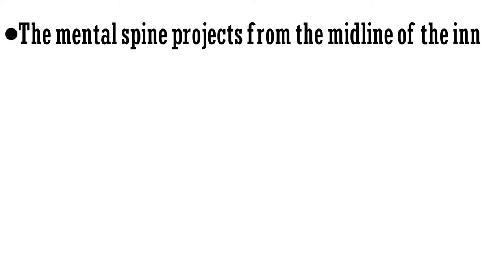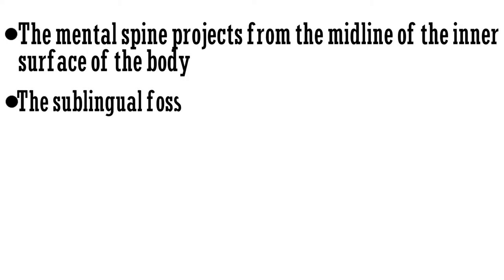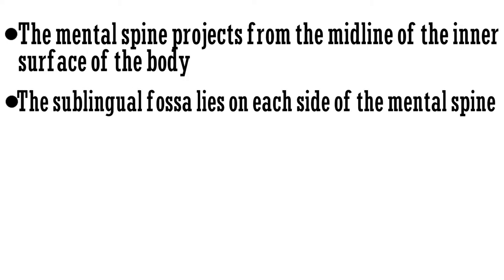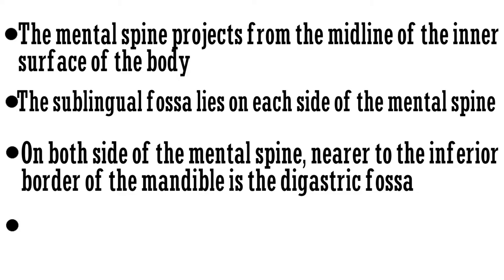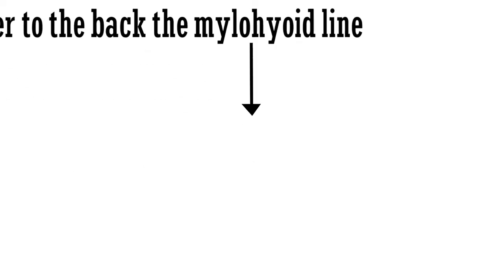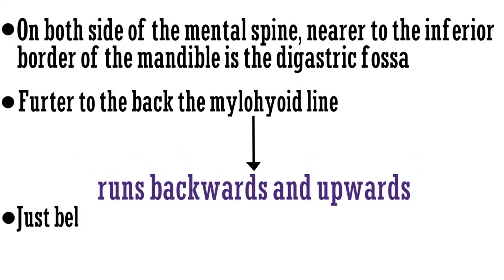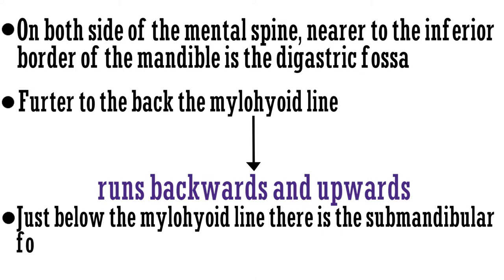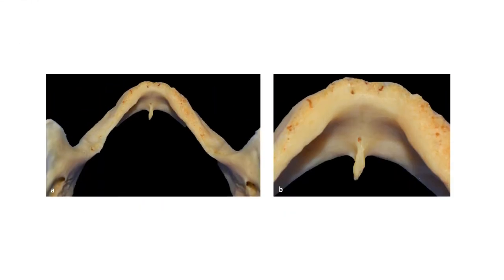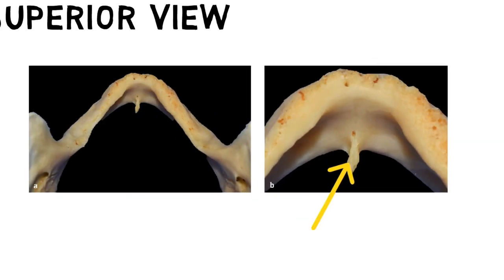The mental spine projects from the midline of the inner surface of the body. The sublingual fossa lies on each side of the mental spine. On both sides of the mental spine, nearer to the inferior border of the mandible, is the digastric fossa. Further to the back, the mylohyoid line runs backwards and upwards, and just below the mylohyoid line there is the submandibular fossa.